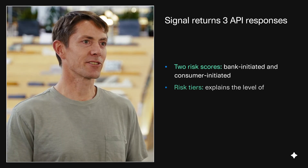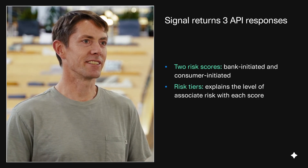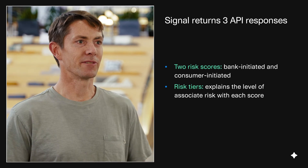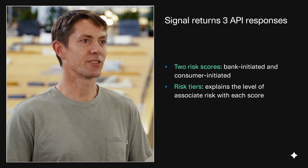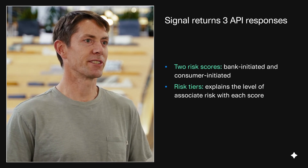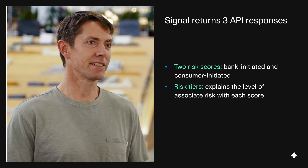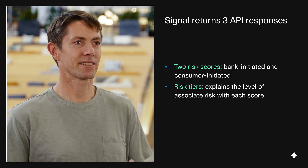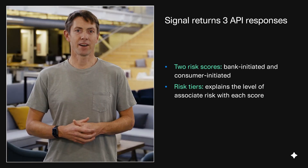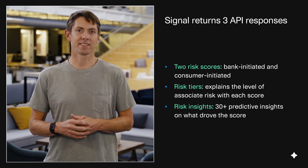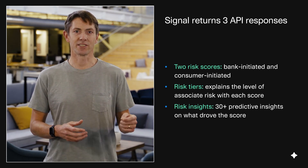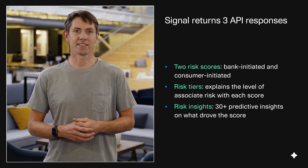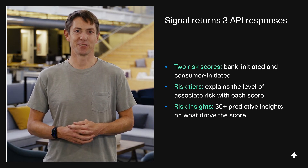We take those scores and put them into risk tiers to help you bound and quantify the risk. Based on your given risk profile, you can choose how you want to treat these transactions — do you want to treat them as high risk, medium risk, or low risk? And finally, we provide feature insights across more than 30 different data points as to what drove the decision. We've packaged all this together into a single API to make it simple and easy for you to use.